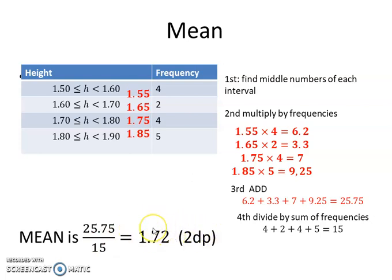So this is our estimation for the mean. It's not the real mean, but it's an estimation, a good estimation for the mean. And obviously, the last step to calculate the range, you just do the biggest minus the smallest. So you do 190 minus 150, the biggest possible value minus the smallest possible value. So you get a range of 0.4, which is quite fair enough. That's all for this. See you.